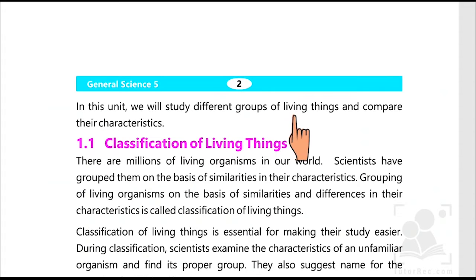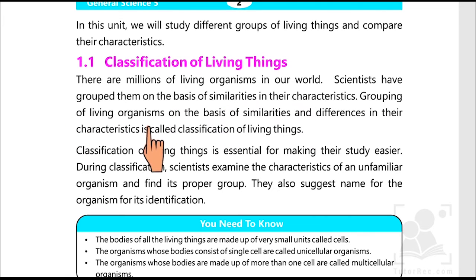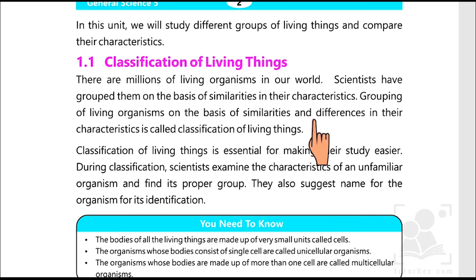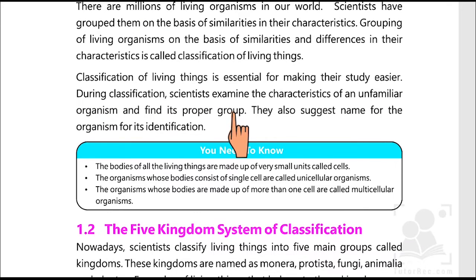In this unit we will study different groups of living things and compare their characteristics. There are millions of living organisms in our world. Scientists have grouped them on the basis of similarities in their characteristics. Grouping of living organisms on the basis of similarities and differences in their characteristics is called classification of living things. Classification is essential for making their study easier. During classification, scientists examine the characteristics of an unfamiliar organism and find its proper group. They also suggest a name for the organism for its identification.